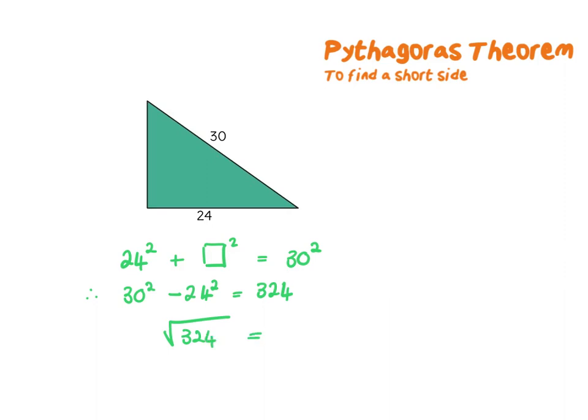Square root of 324 is 18. Once again if you would like to do this in a shorter way you can put it in the square root sign from the start. Within the square root sign you will say 30 squared subtract 24 squared and that will give you 18 straight away.